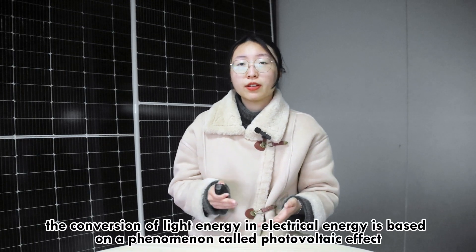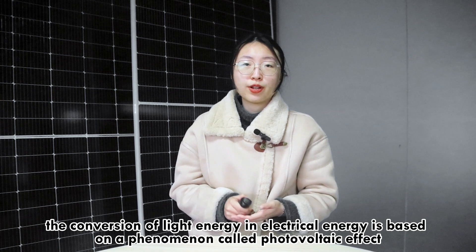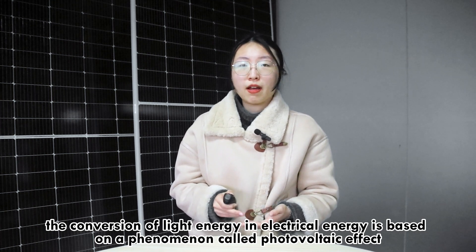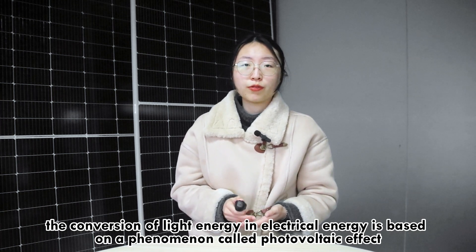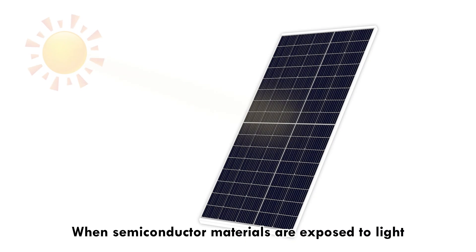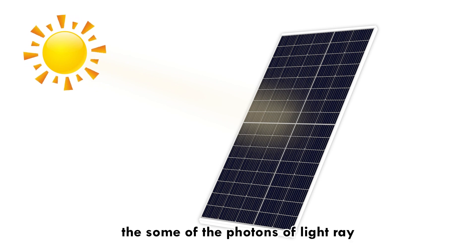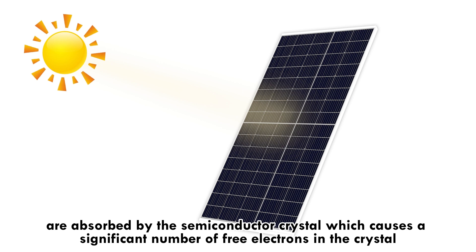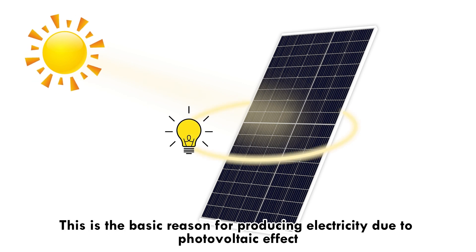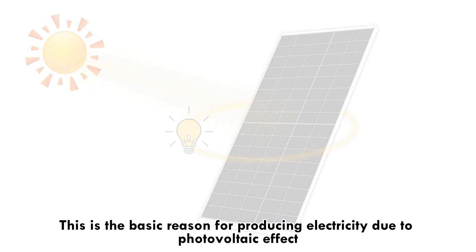Simply put, the conversion of light energy to electrical energy is based on a phenomenon called the photovoltaic effect. When semiconductor materials are exposed to light, some of the photons are absorbed by the semiconductor crystal, which causes a significant number of free electrons in the crystal. This is the basic reason for producing electricity through the photovoltaic effect.